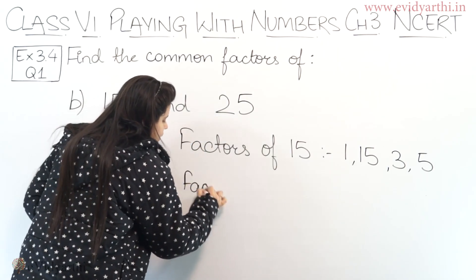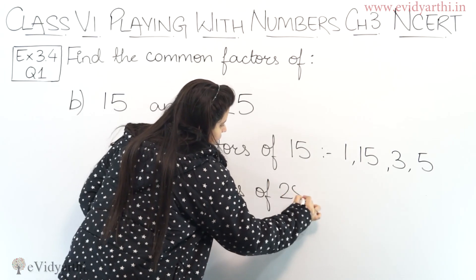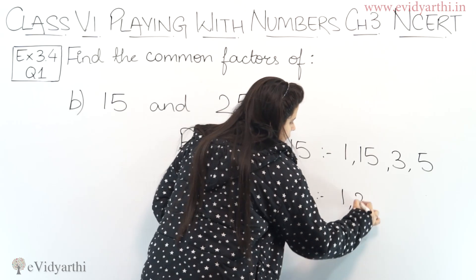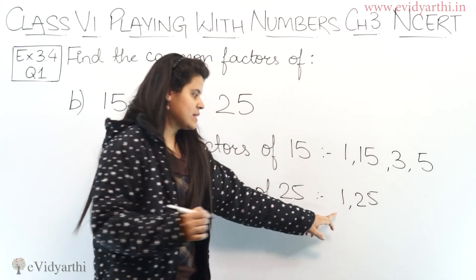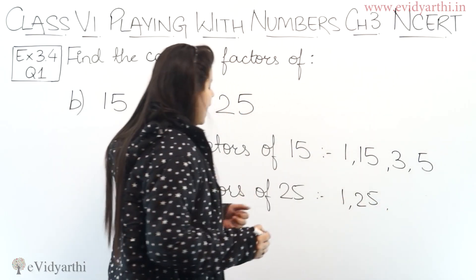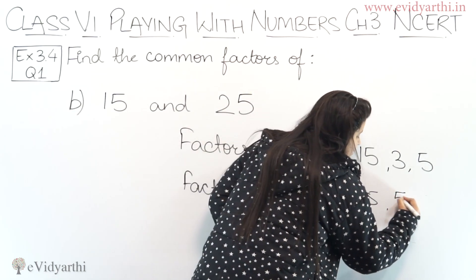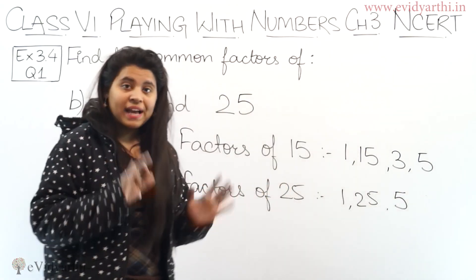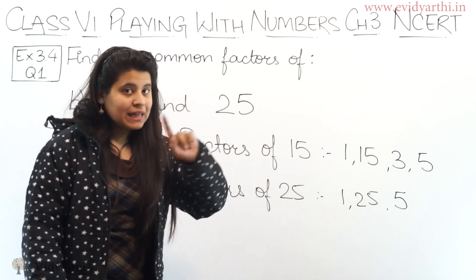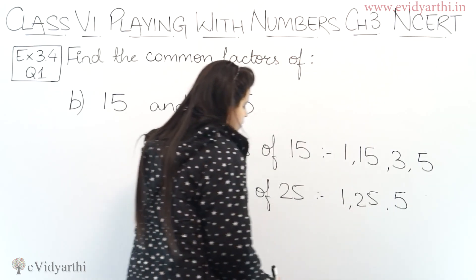Now we will write factors of 25. Factors of 25 will be 1 and 25, because 1 is always a factor and 25 is the number itself. Then 2, 3, 4 are not factors. But 5 into 5 is 25, so 5 is a factor. Above 5, no other table gives 25. So the factors of 25 are 1, 25, and 5.